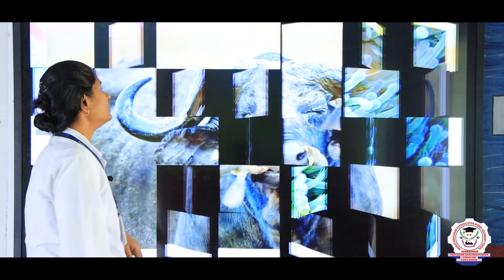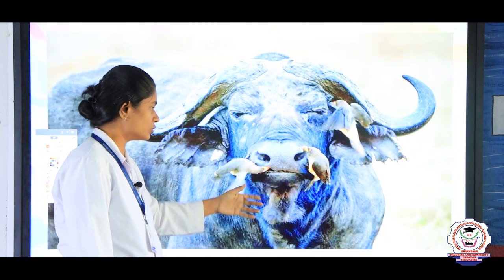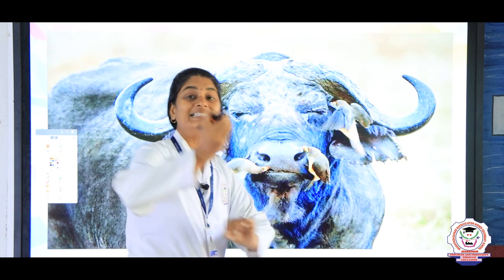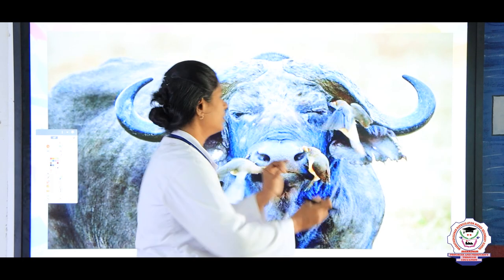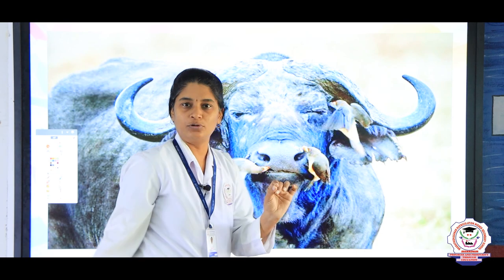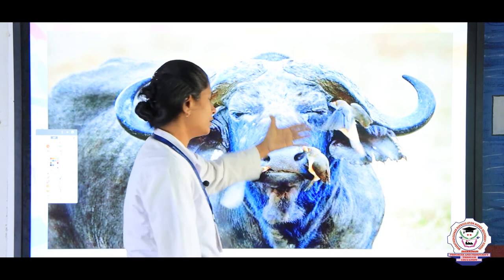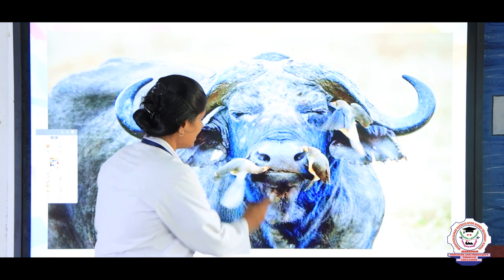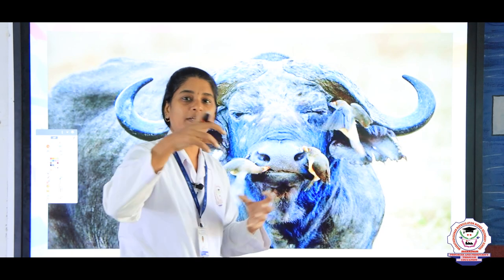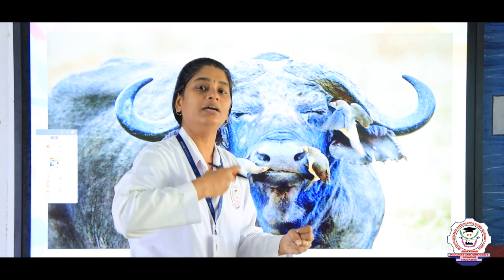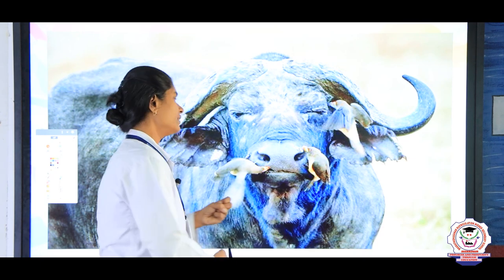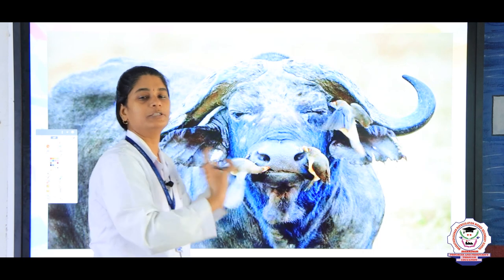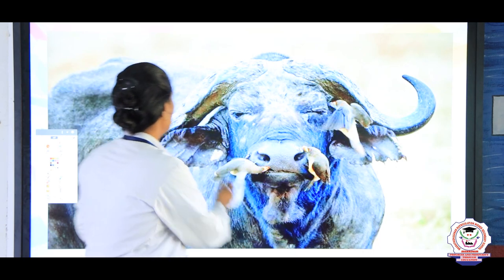The next example is a buffalo and crow. Many small insects come near the mouth of the buffaloes. The birds come and eat all those insects that disturb the buffalo. So two different species are both getting benefited.